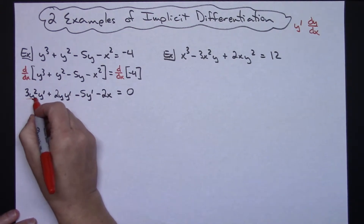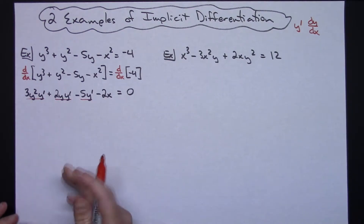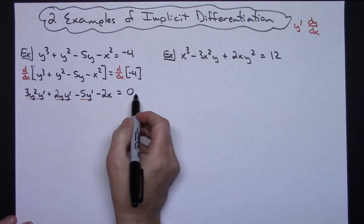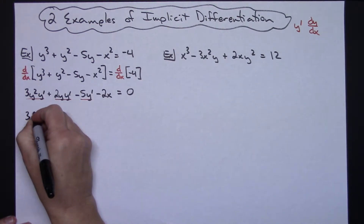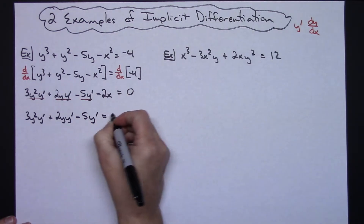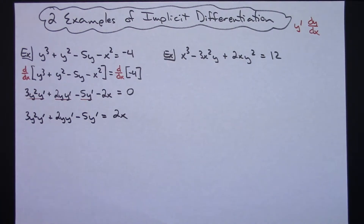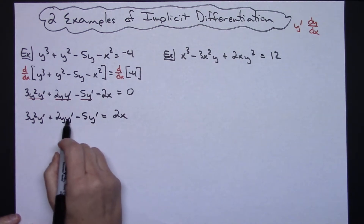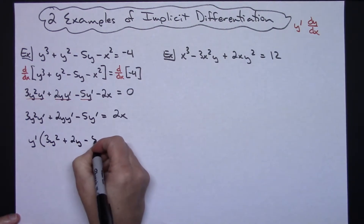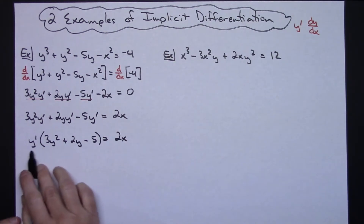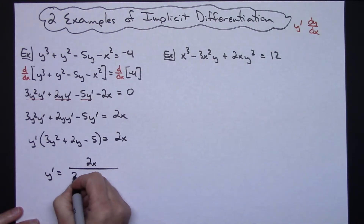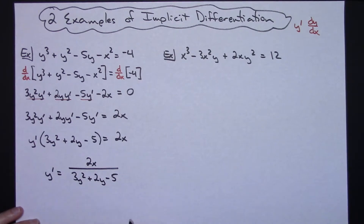The derivative of the right-hand side, negative 4, is 0. Now I look for every term that includes y prime and keep those on the left-hand side; every other term goes to the right. The 2x crosses the equal sign and becomes positive. So: 3y²·y′ + 2y·y′ − 5y′ = 2x. The ultimate goal is to solve for y prime, so I factor it out: y′(3y² + 2y − 5) = 2x.